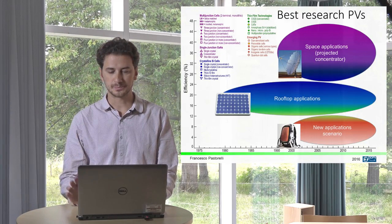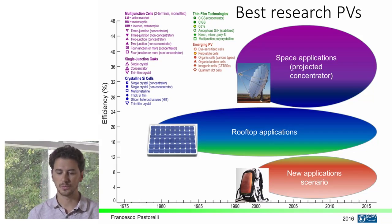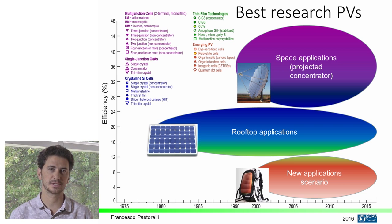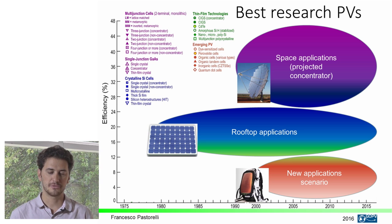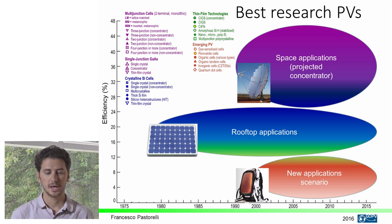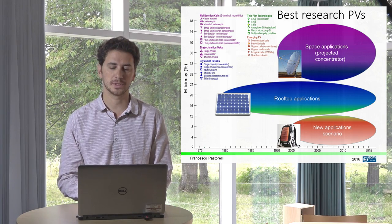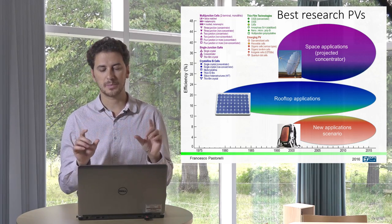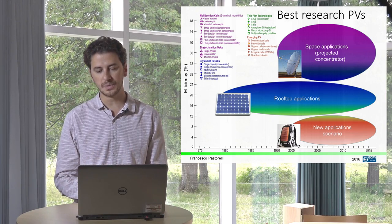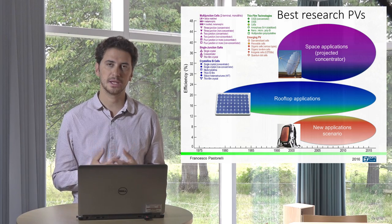To have an overview on solar cells, I normally use this slide to show the variety of different solar cell technologies that are available now in science and also on the market. I like to schematize these technologies in three macro groups. The top part with a purple and blue color identifies all the solar cells that are high performance but are used basically in space applications or combined with solar concentrators. In the central part of the graph, with blue and greenish colors, there are the rooftop application solar cells, mainly represented by silicon technology.